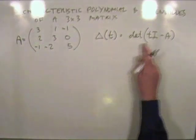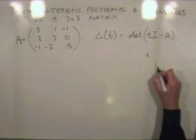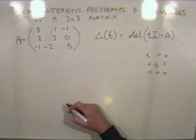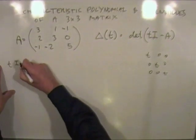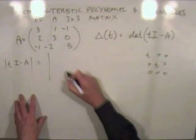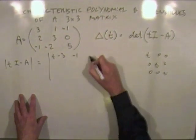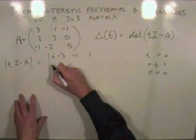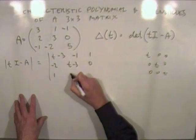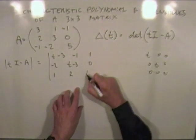Since we have a three by three matrix, tI will just have t down the main diagonal with zeros everywhere else. So tI minus A gives us a matrix where each diagonal entry is t minus the corresponding diagonal of A. The determinant of tI minus A has entries like t minus three on the diagonal, with the off-diagonal entries negated from A, down to t minus five in the last position.